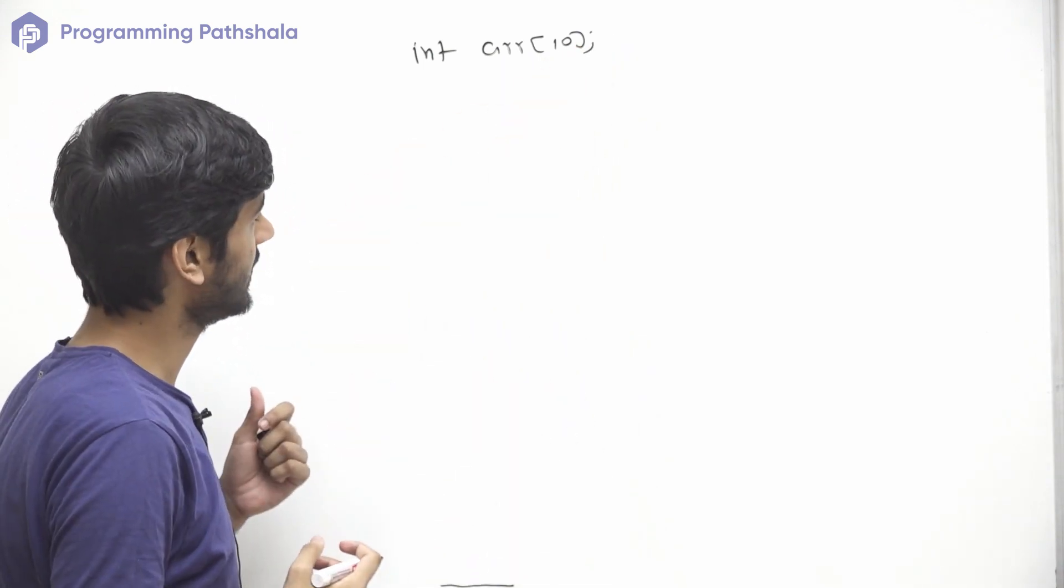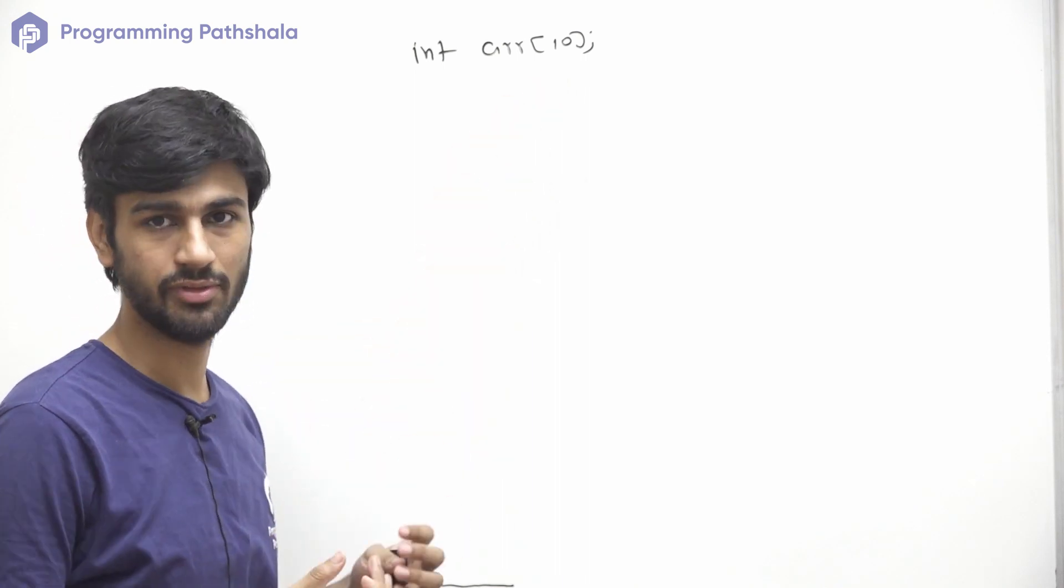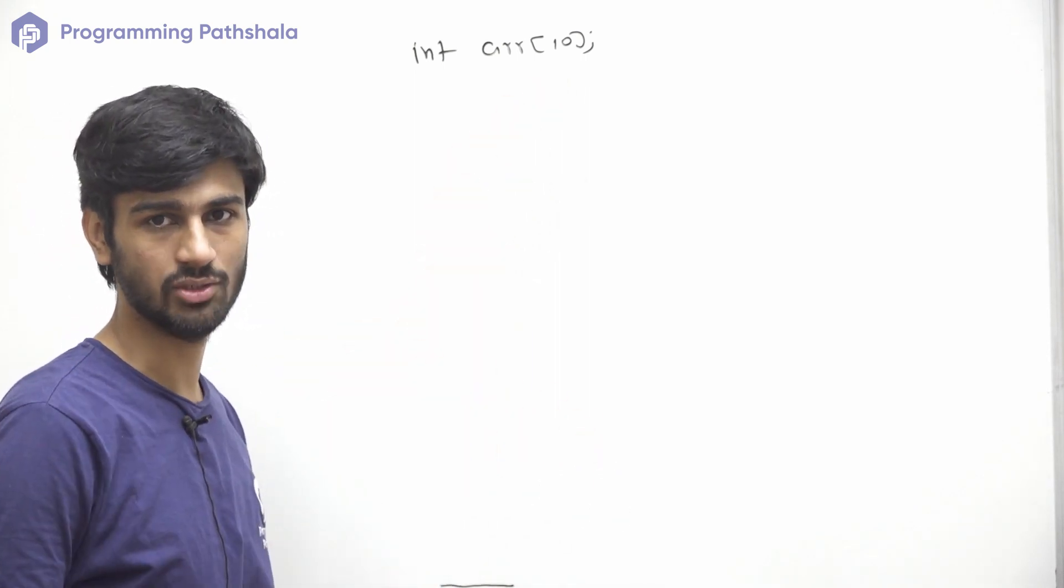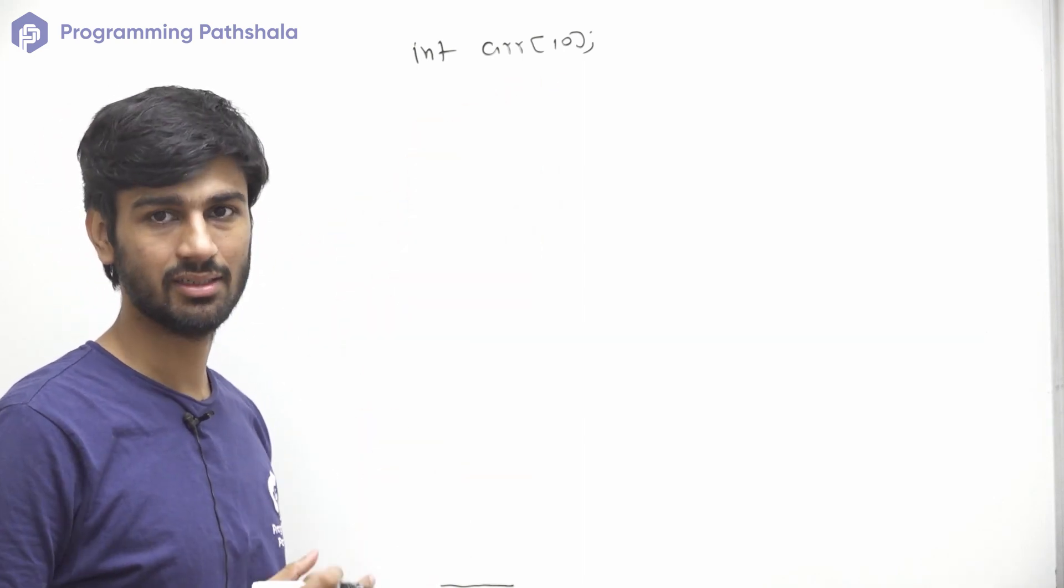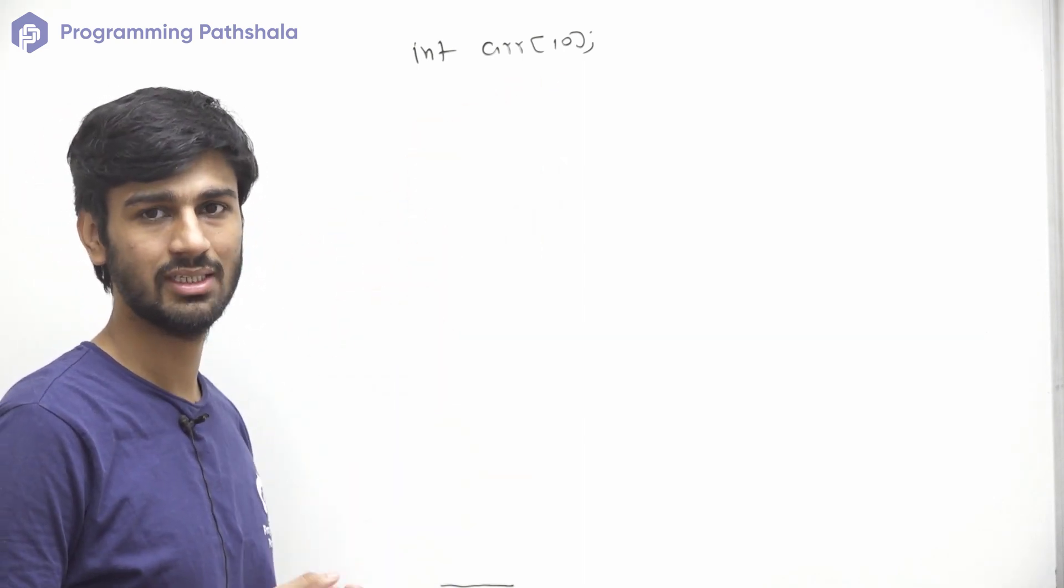But the problem with this array is that this size can't be changed. We cannot increase or decrease the size of it. So we can say the size of this array is static, and that is why these arrays are also known as static arrays.